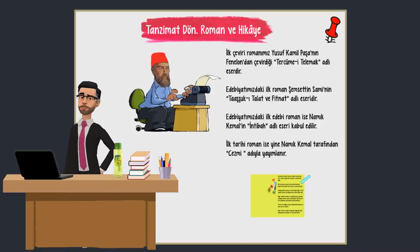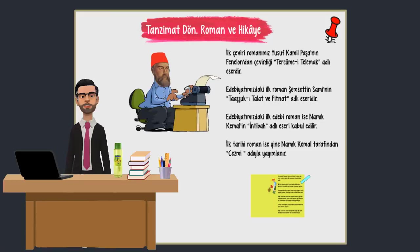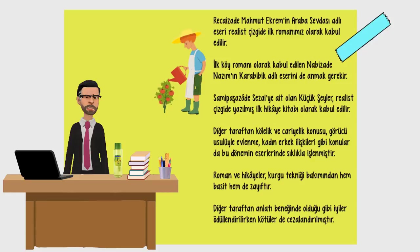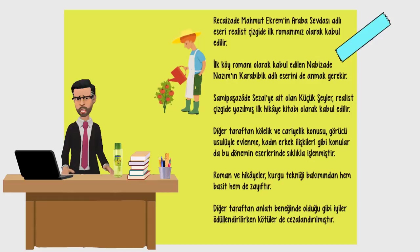Şimdi sizlerle Tanzimat döneminde roman ve hikaye özelliklerine bakalım. İlk çeviri romanımız Yusuf Kamil Paşa'nın Fenelon'dan çevirdiği Tercüme-i Telemak adlı eserdir. Edebiyatımızdaki ilk roman Şemsettin Sami'nin Taaşşuk-ı Talat ve Fitnat adlı eseridir. Edebiyatımızdaki ilk edebi roman ise Namık Kemal'in İntibah adlı eseri kabul edilir. İlk tarihi roman ise yine Namık Kemal tarafından Cezmi adıyla yayımlanır. Recaizade Mahmut Ekrem'in Araba Sevdası adlı eseri realist çizgide ilk romanımız olarak kabul edilir. İlk köy romanı olarak kabul edilen Nabizade Nazım'ın Karabibik adlı eserini de anmak gerekir.